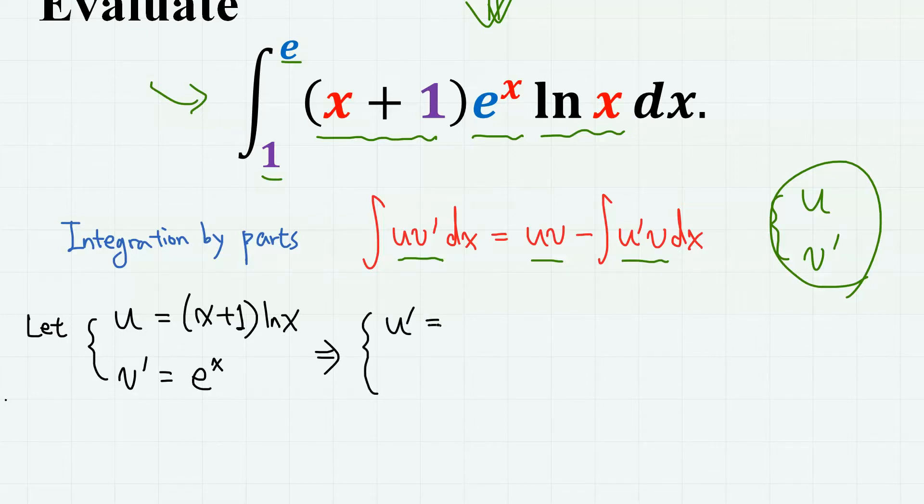Then u' is given by the product rule: 1 times ln(x) plus (x+1) times 1/x, which is ln(x) + 1 + 1/x. And v is simply the integral of e^x, which is also e^x.